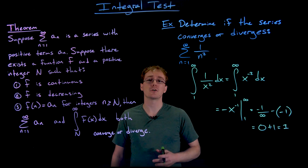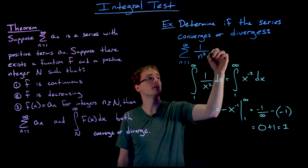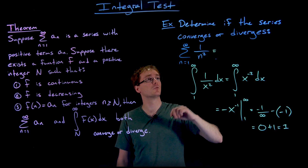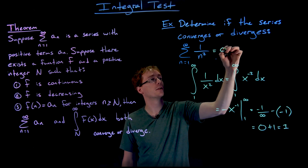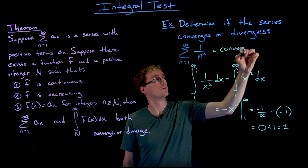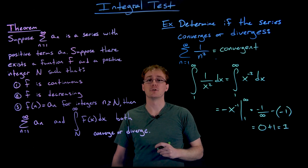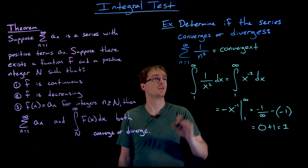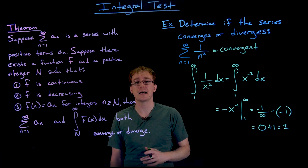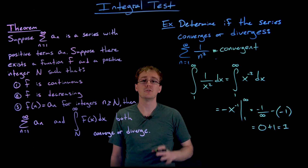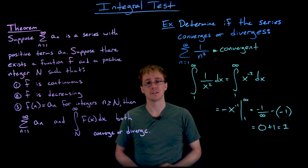And since our improper integral converges, we know the series, the sum from n equals 1 to infinity of 1 over n squared, must also be a convergent series. We don't know what it is actually equal to, but we do know for sure that it is going to be a convergent series.